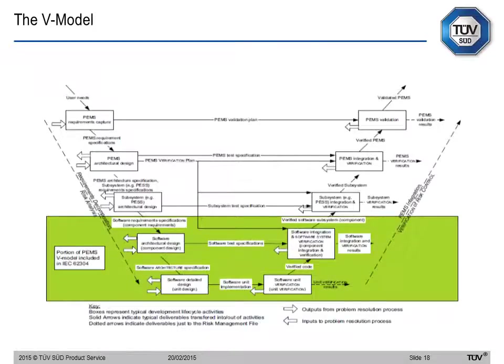Let's not forget the V model. This is a well-known graph taken from one of the standards. It is called V because it looks like a V. It starts from the top left corner, goes all the way down, and then starts from the bottom back up to the top right corner. The green area is taken from the software standard EN62304 — that is the software validation portion. Together, this V model gives you a very structured way of knowing where to start and where to finish.